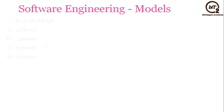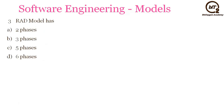The next question is: RAD Model has how many phases? Options: 2, 3, 5, or 6. If you have gone through the theory of RAD Model thoroughly, you will know that RAD Model has 5 phases. You need to write down the phases in the comment section.